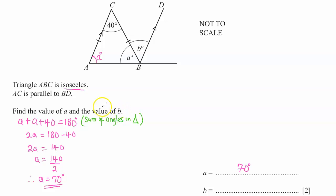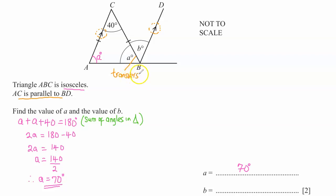Next we obtain the value of angle B. We use the fact that lines AC and BD are parallel — the arrow is the symbol for parallelism. Since these two lines are parallel, that makes line BC a transversal line, because a transversal is a line drawn across two or more parallel lines. When the transversal cuts across parallel lines: alternate angles are equal, corresponding angles are equal, and vertical angles are equal.